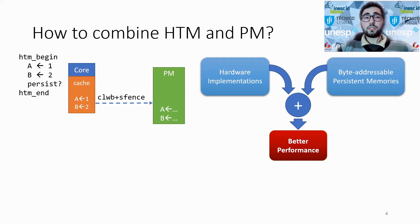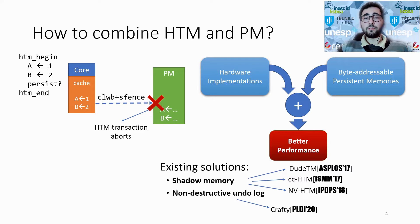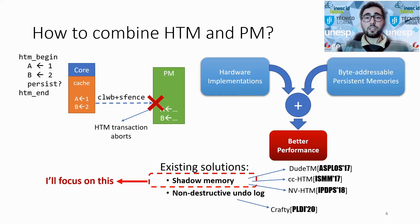Existing solutions, like DUTM, CCHTM and VHTM, solve this problem using a shared memory approach, whereas Crafty uses a non-destructive undo-log approach. In this presentation I will focus on shadow memory solutions, and you can find a broader analysis in the paper.